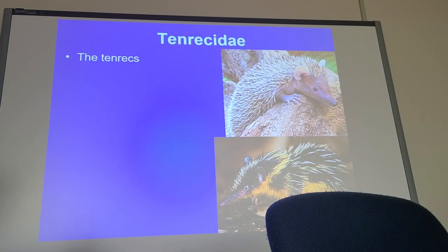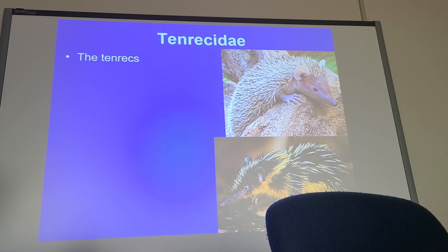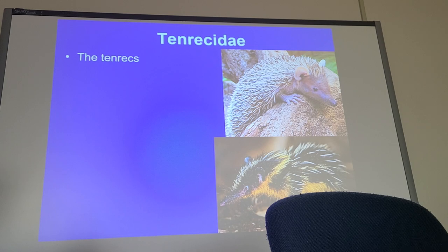The other group in Afrosoricida is Tenrecidae — the tenrecs. You can see why they would have been grouped with hedgehogs — there are definite morphological similarities. But that's convergent evolution, not shared ancestry. Things often look alike when they're not at all related, and that's very common in the mammal world.